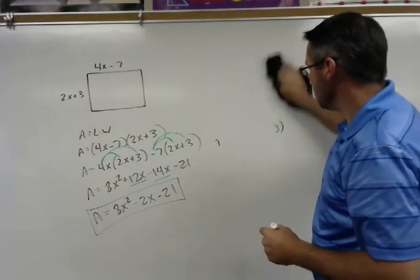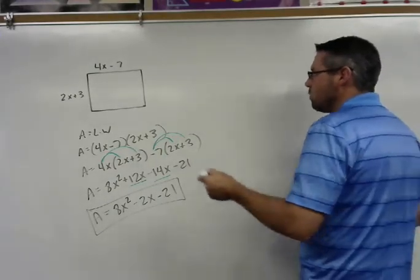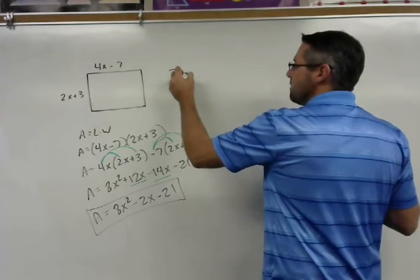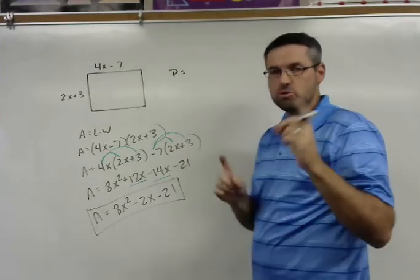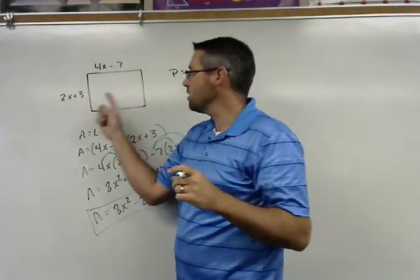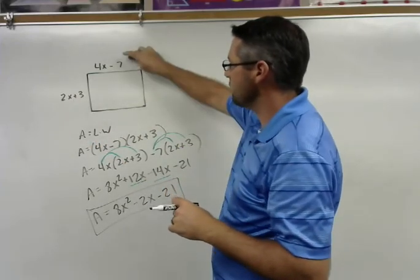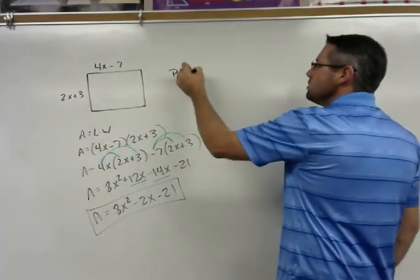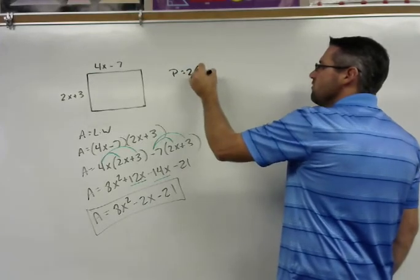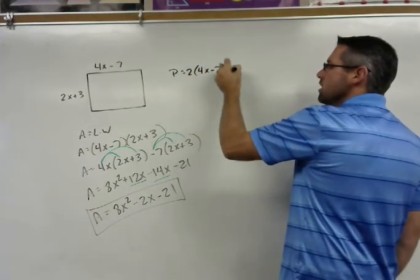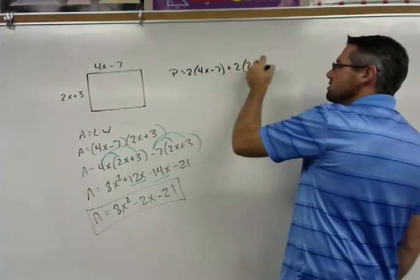So with our polynomial rectangle, we would say that the perimeter, I'm going to go ahead and use the idea of two sides are congruent here. So if that's 2x plus 3, this length is going to be 2x plus 3. If that's 4x minus 7, that'll be 4x minus 7. So it'll be 2 times 4x minus 7 plus 2 times 2x plus 3.